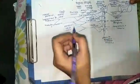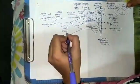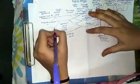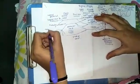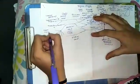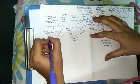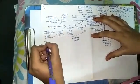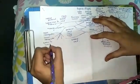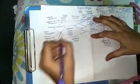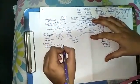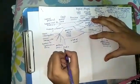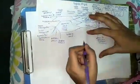The posterior cord gives rise to five nerves, which can be remembered through the mnemonic ULNAR. U is upper subscapular nerve, L is lower subscapular nerve, N is nerve to latissimus dorsi, A is axillary nerve, and R is radial nerve. In this way, the five nerves get raised from this posterior cord.